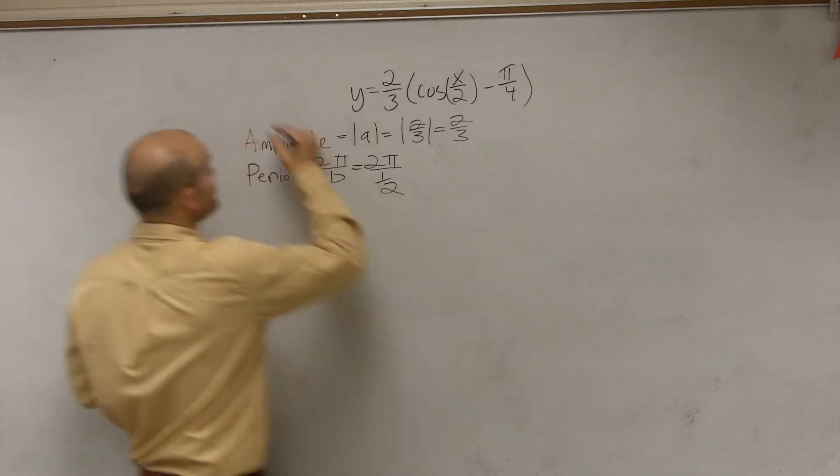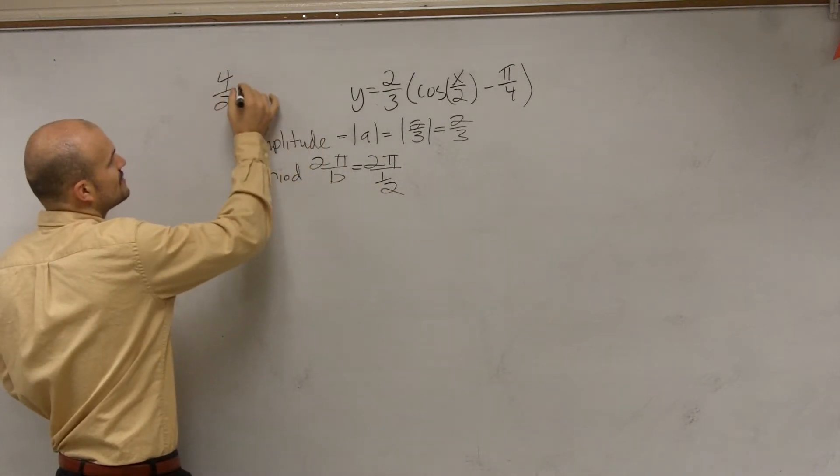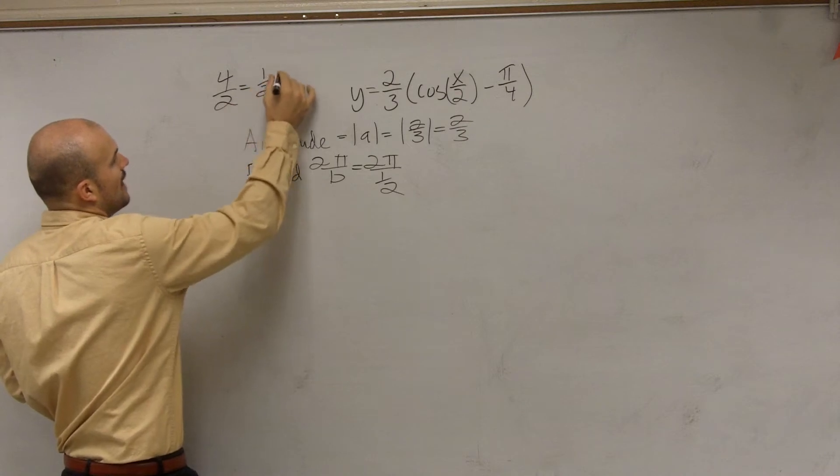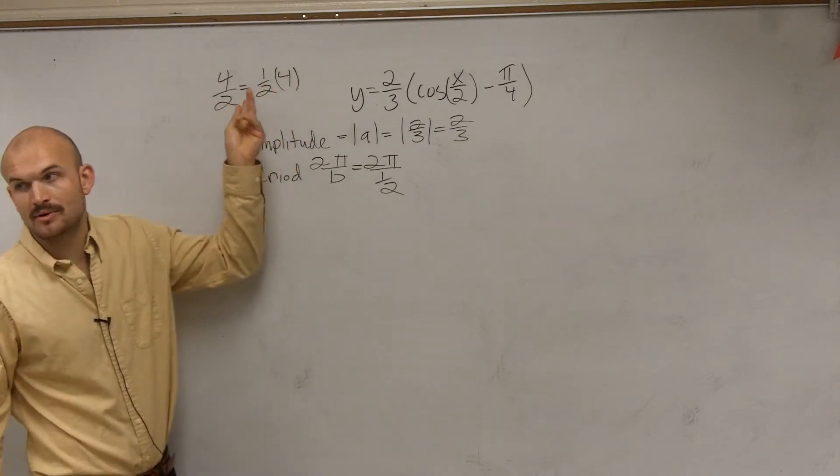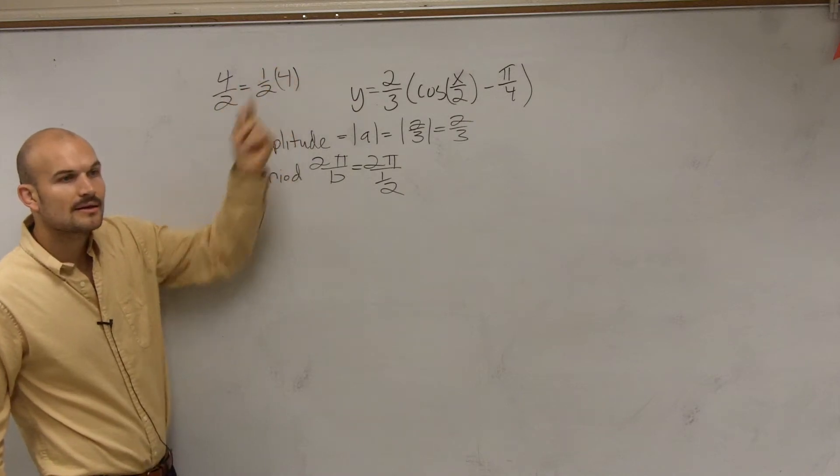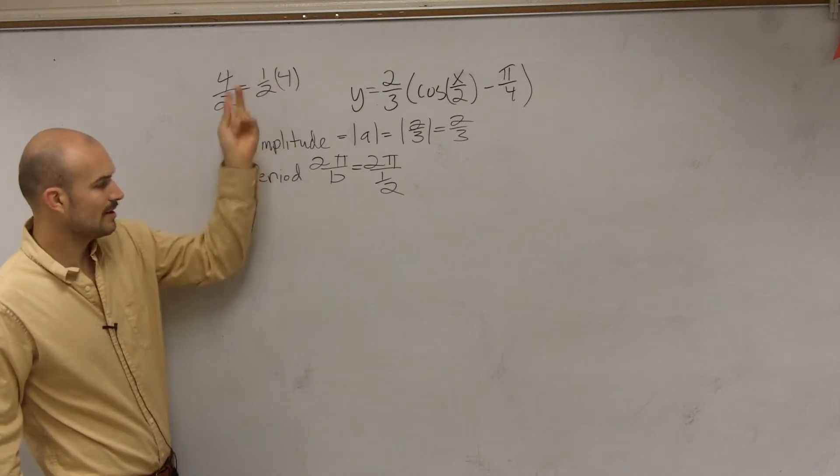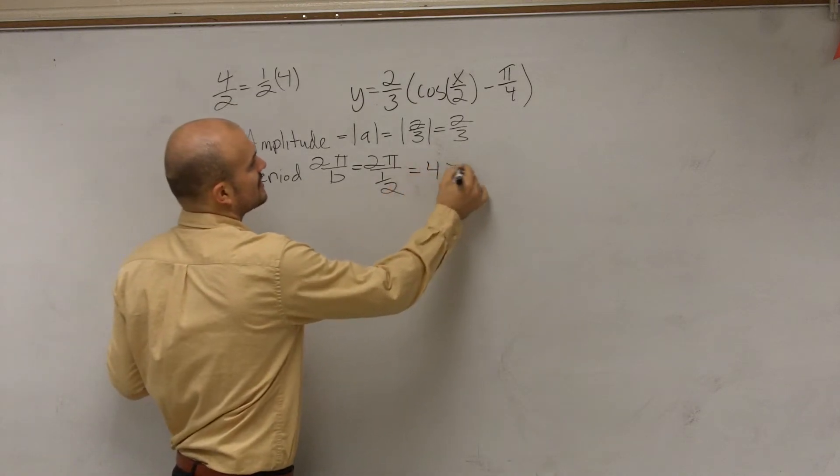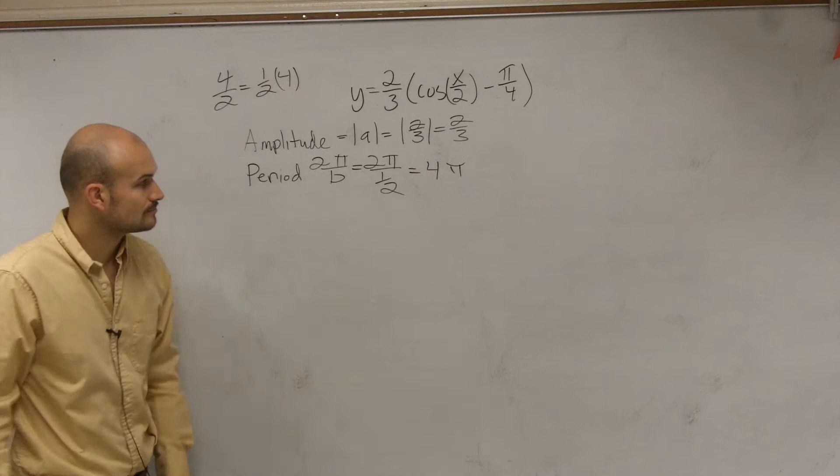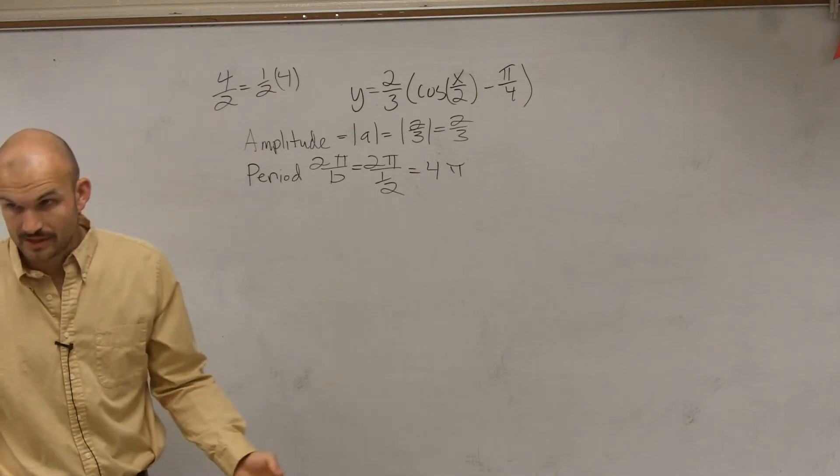And I'll state my case here real quickly. Four divided by two is equal to one-half times four, correct? So when you're dividing by that number, it's the same thing as multiplying it by one-half or whatever it is. So therefore, by simplifying this fraction, I get four pi. So that's our period.